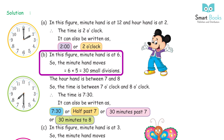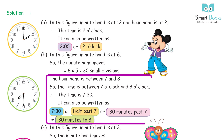B: In this figure, the minute hand is at 6. So the minute hand has moved 6 × 5 = 30 small divisions. The hour hand is between 7 and 8. So the time is between 7 o'clock and 8 o'clock. The time is 7:30. It can also be written as 7:30, half past 7, 30 minutes past 7, or 30 minutes to 8.